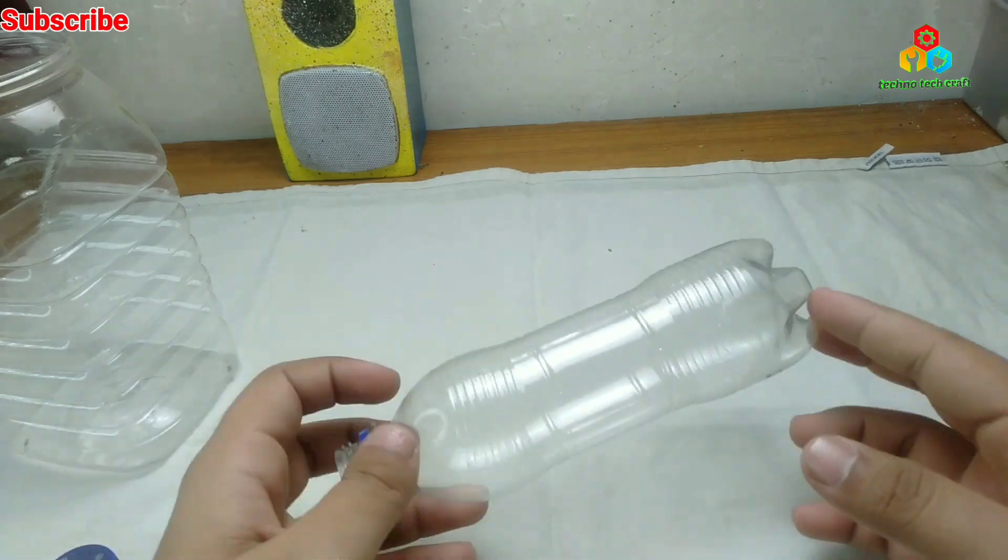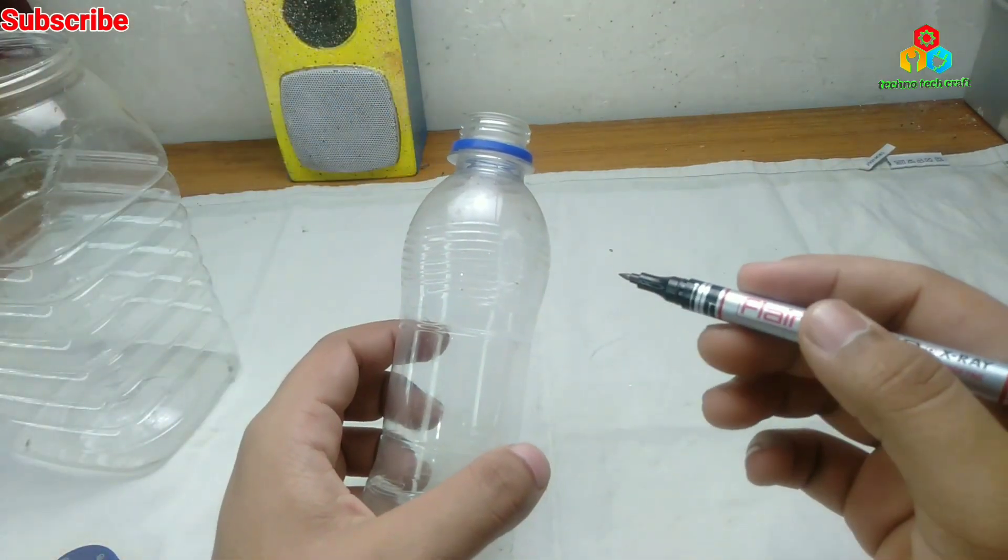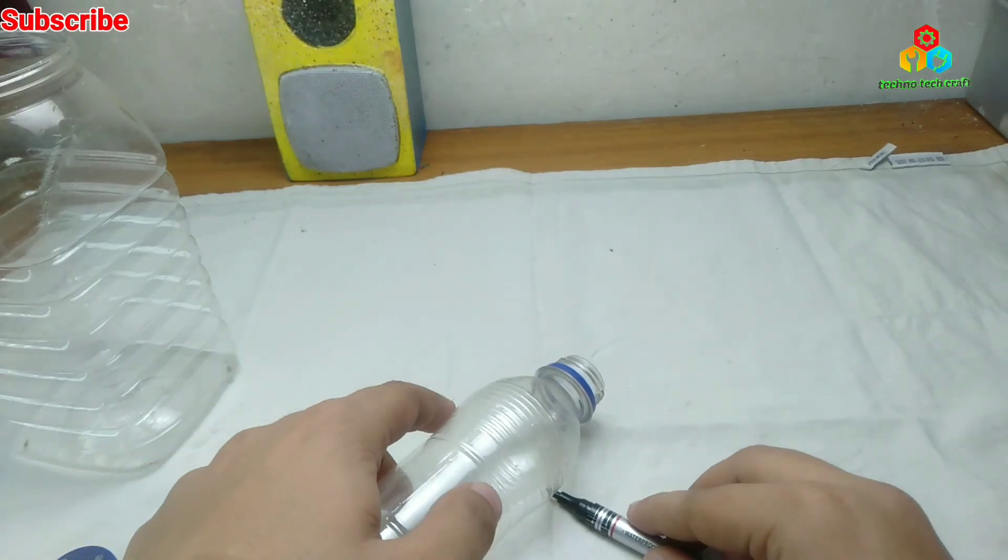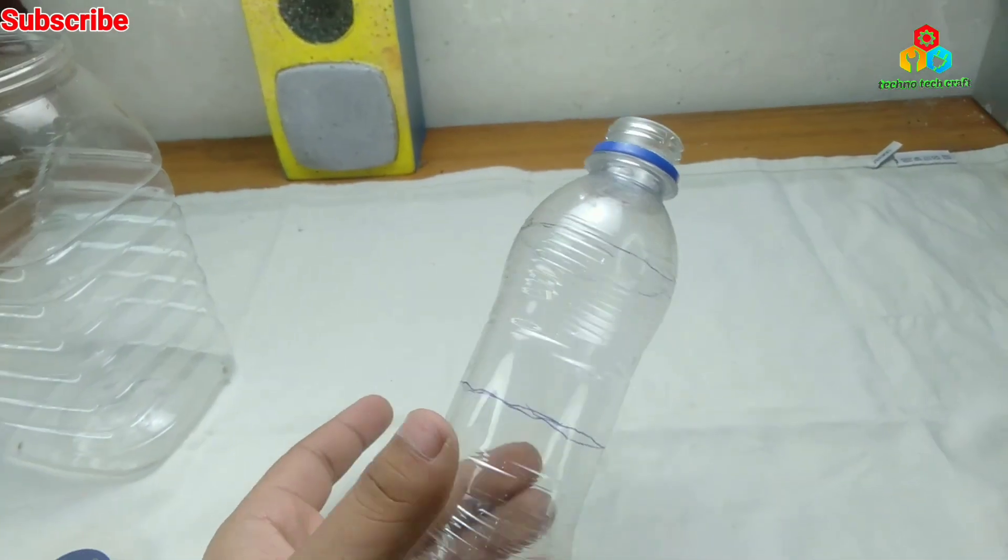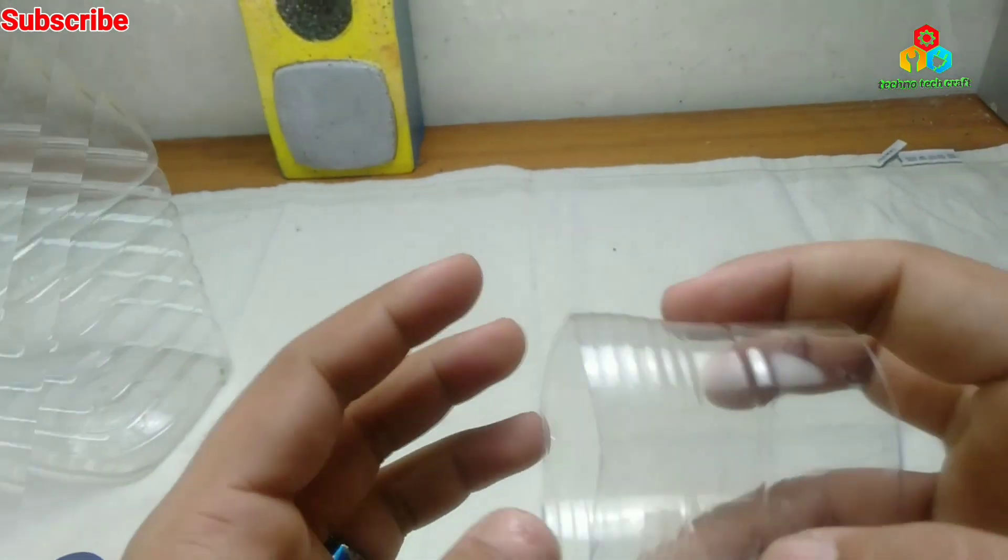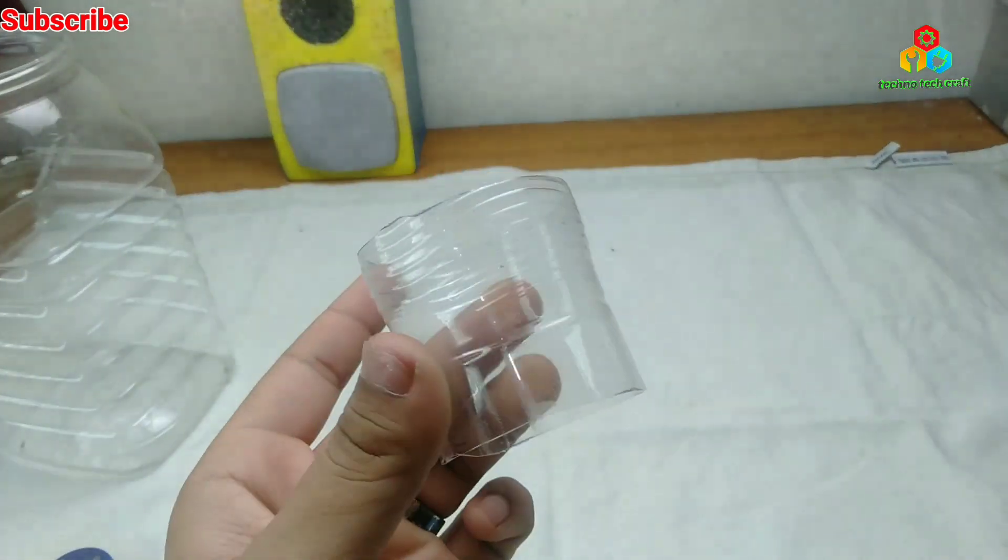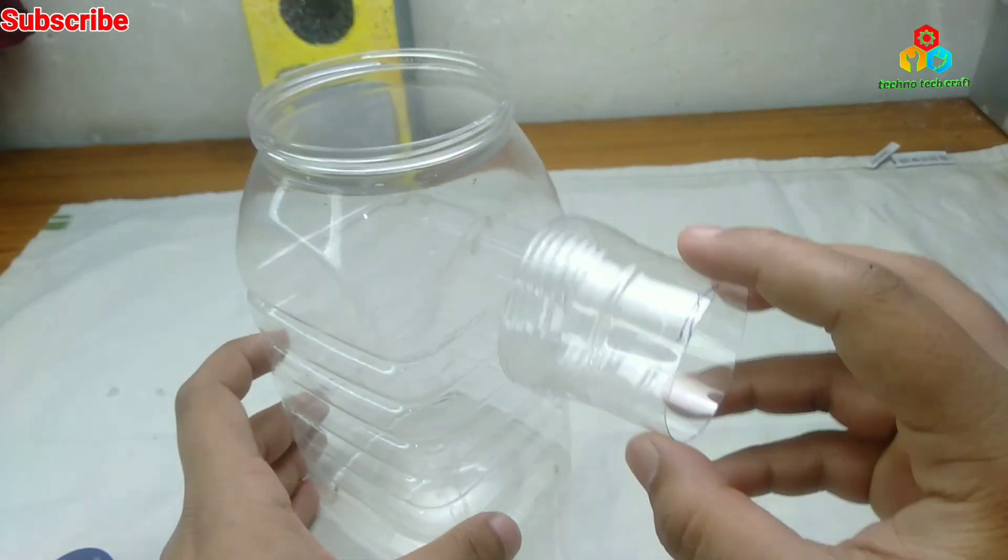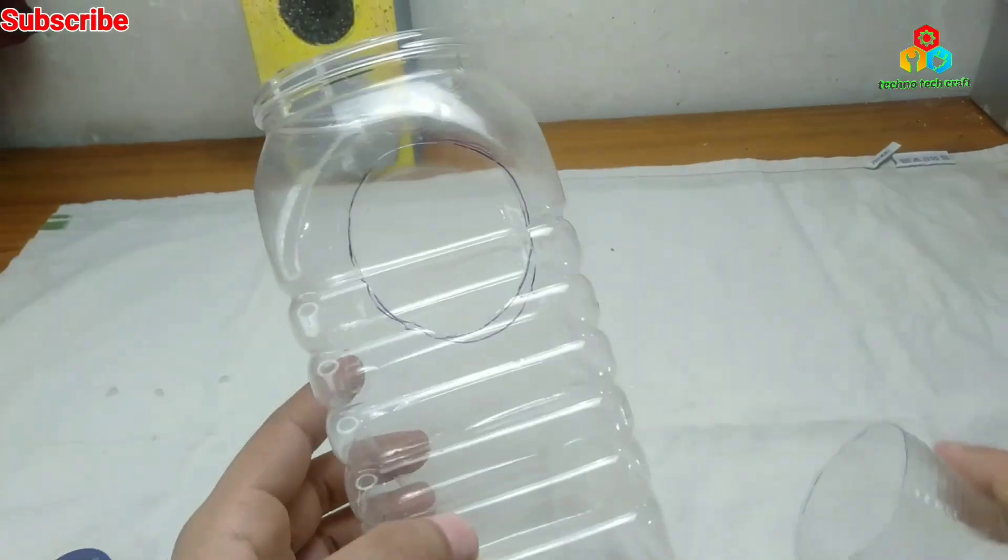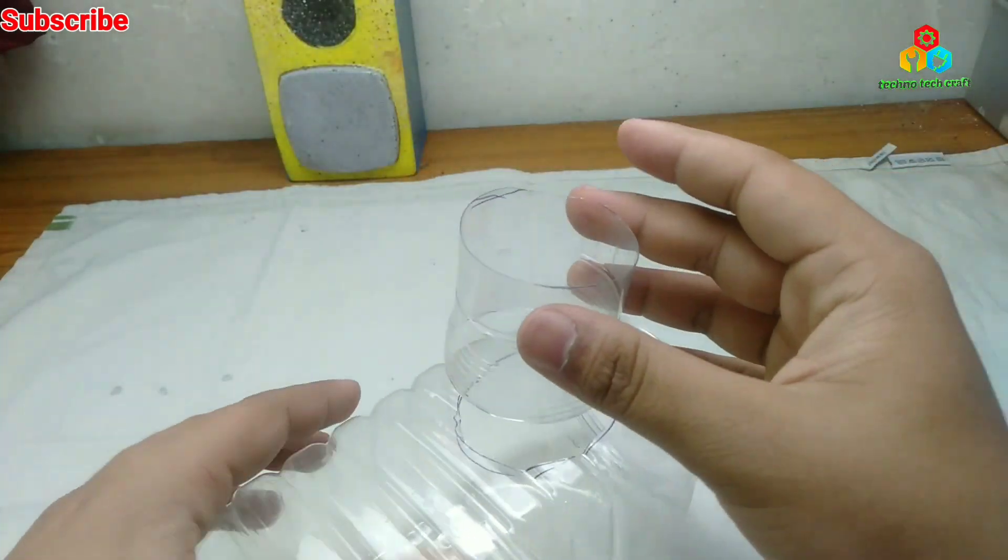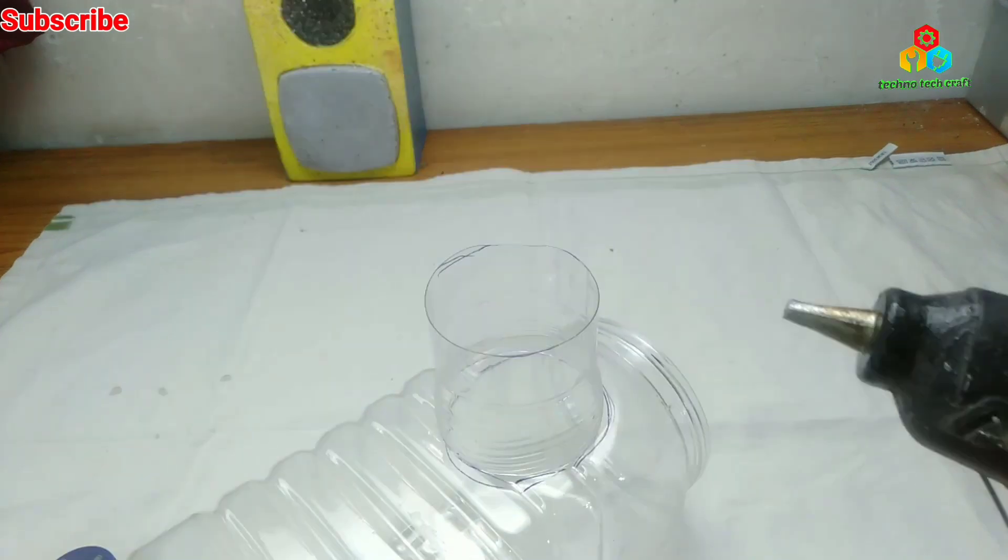We cut the bottle cap first. We need a piece so that the air outlet will be used. And we will insert the bottle cap. We have put it in the container. We include the hot glue.